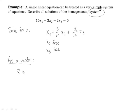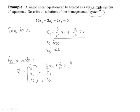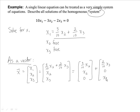Since x1 is the basic variable, x2 and x3 are free variables. Writing vector x — which consists of x1, x2, x3 — we replace x1 with 3/10 x2 plus 2/10 x3, while x2 and x3 are themselves. Splitting into two vectors: we have 3/10 x2, x2, 0 plus 2/10 x3, 0, x3. Factoring out gives x2 times (3/10, 1, 0) plus x3 times (2/10, 0, 1).